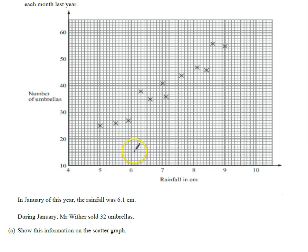So 6.1 is exactly on this, this is 0.1, 0.2, 0.3, 0.4, 0.5, yeah that works. So 6.1, follow this line up, sold 32 umbrellas, exactly there. Every square is worth one umbrella going up, every square is worth 0.1 of a centimeter, or a millimeter going across. So we've put that on.